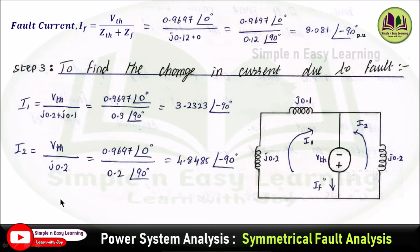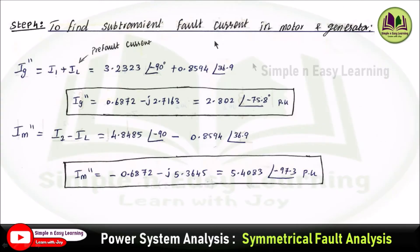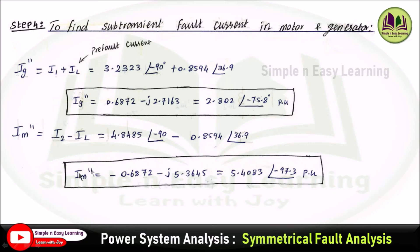Step 4: Find the sub-transient fault current in the motor and generator. The generator sub-transient current I_G'' equals I1 plus I_L — adding the pre-fault current I1 (calculated in Step 3) to the load current gives the generator sub-transient current. For the motor end, I_M'' equals I2 minus I_L. Since the fault occurs at the motor terminal, you subtract I_L to get the motor sub-transient fault current. This is how fault analysis using Thevenin's theorem is solved when terminal voltages are given.